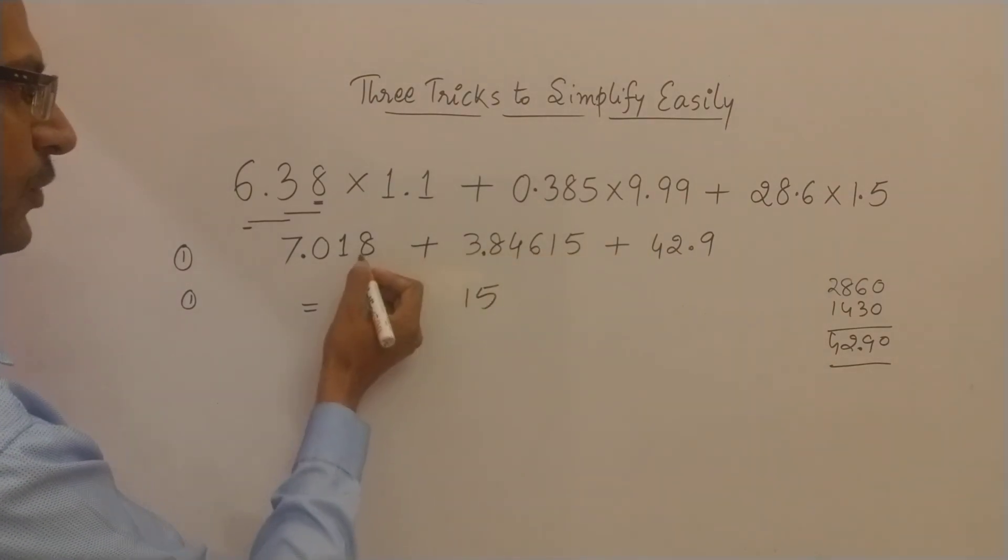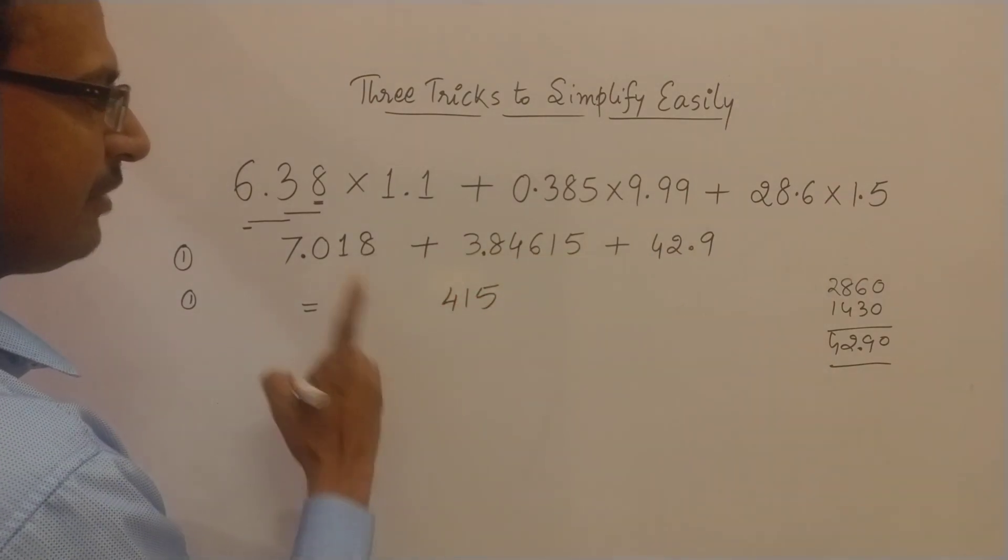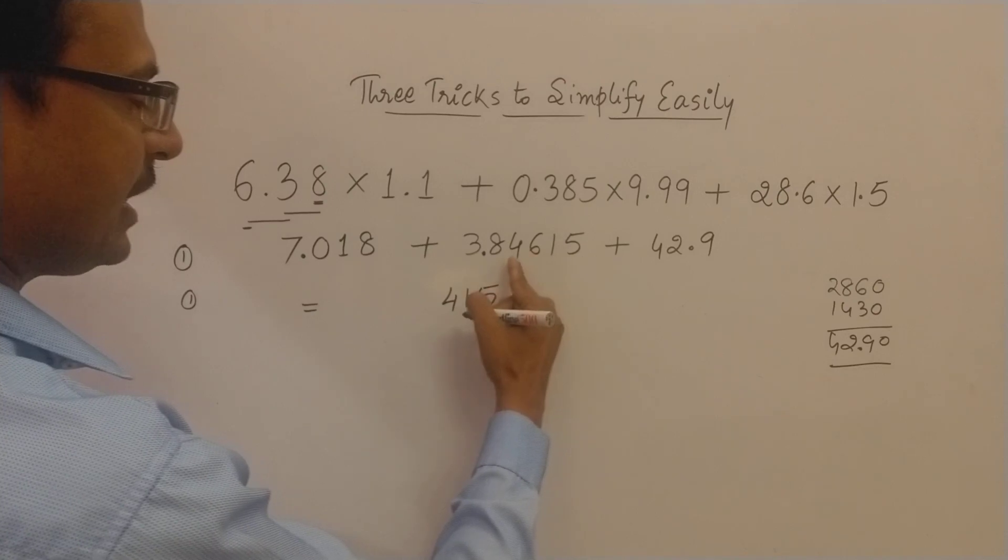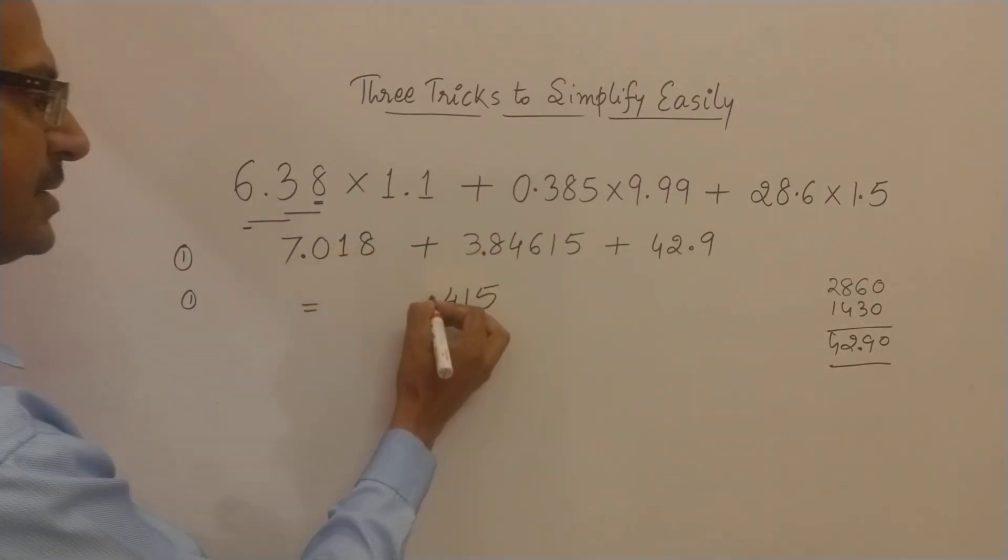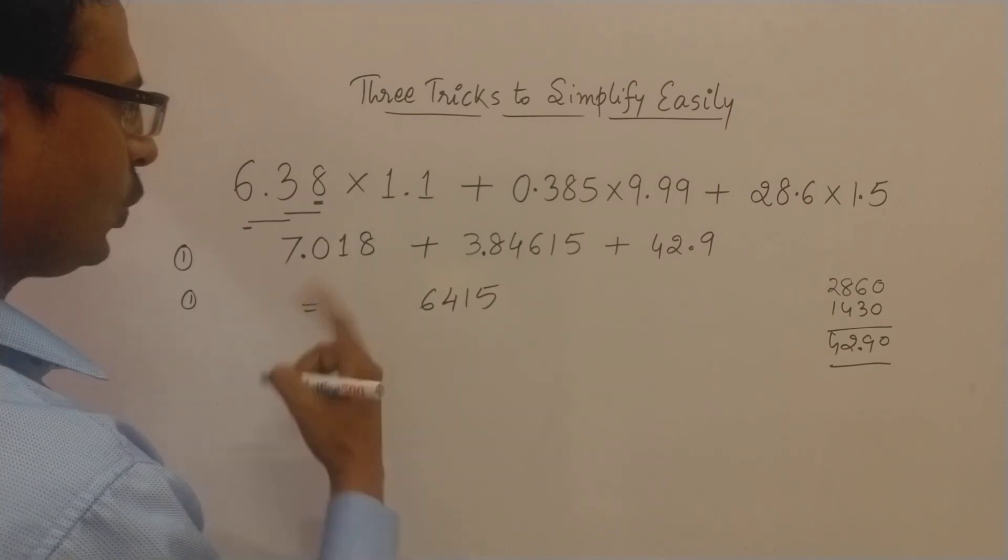So this is 6 and 8, 14, 4. Then we have a 1 carry. Then the second place: 1 plus 4, 5; 5 plus 1, 6. Okay, no carries now.